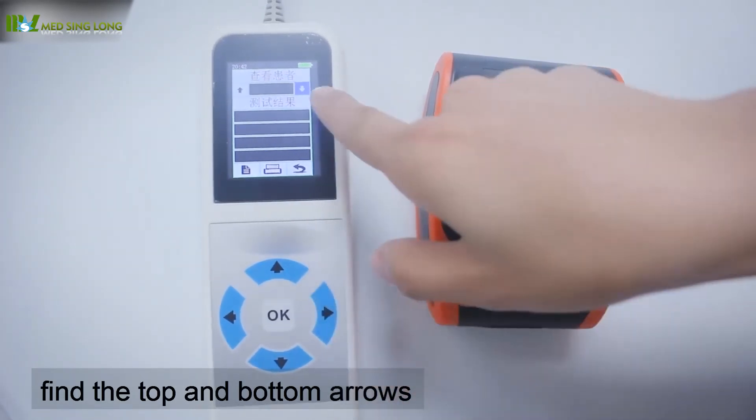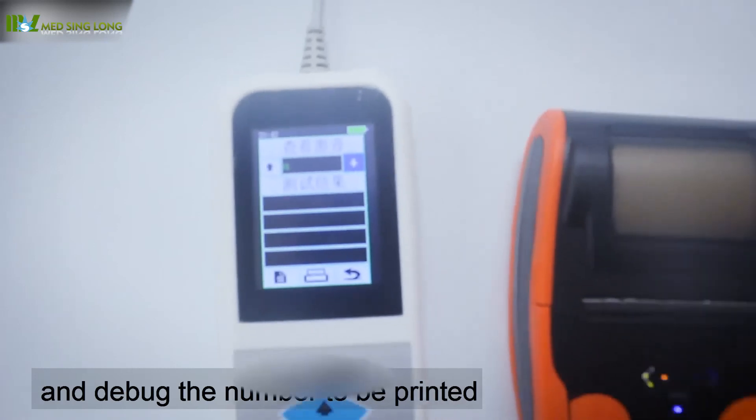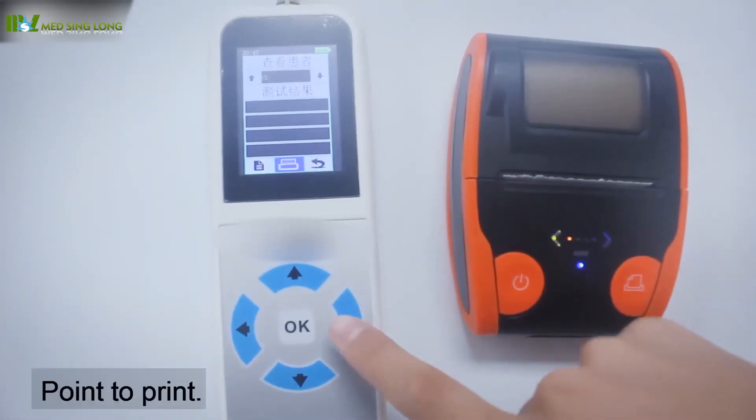Find the top and bottom arrows and adjust the number to be printed. Click print.